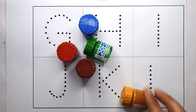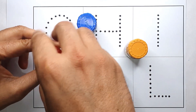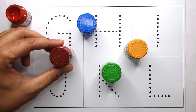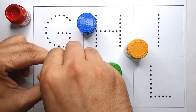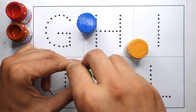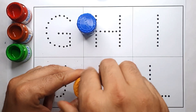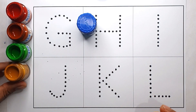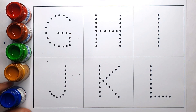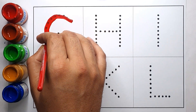Hello kids, let's learn some colors name. Red color. Brown color. Green color. Yellow color. Blue color.